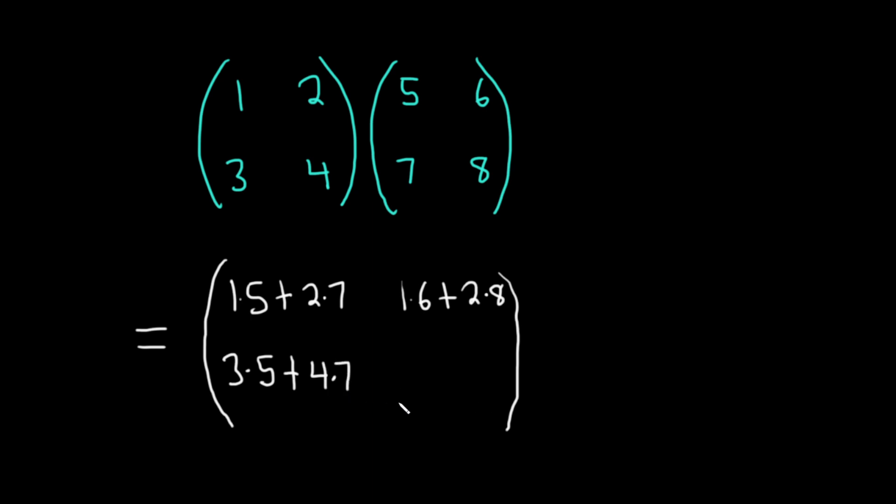Very nice. And here we're in the second row, second column, so we use the second row, second column. So three times six plus four times eight. So that's how we would do the matrix multiplication there.